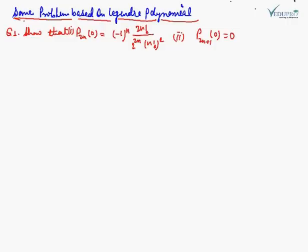Now we are going to discuss some problems based on Legendre polynomials. Our question is: show that first, P₂ₙ(0) is equal to (−1)ⁿ (2n)! divided by 2^(2n) (n!)², and second, P₂ₙ₊₁(0) is equal to 0.